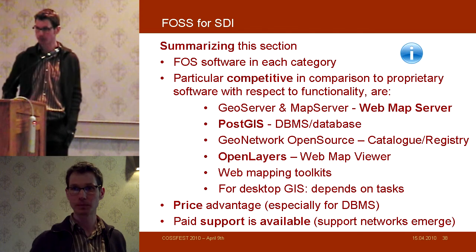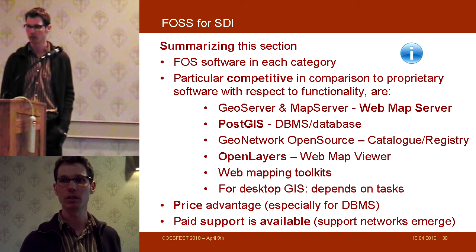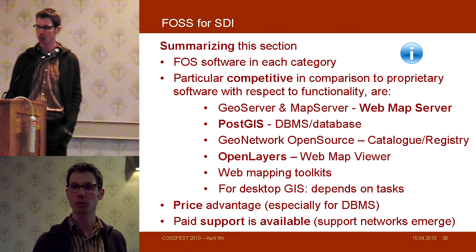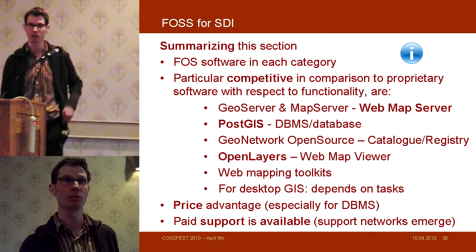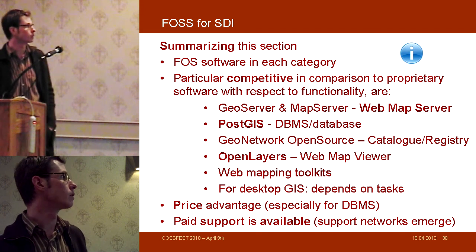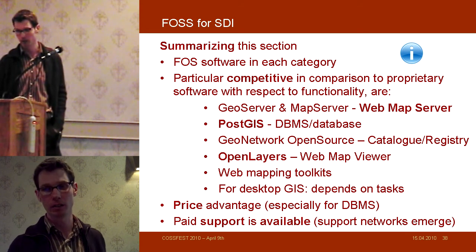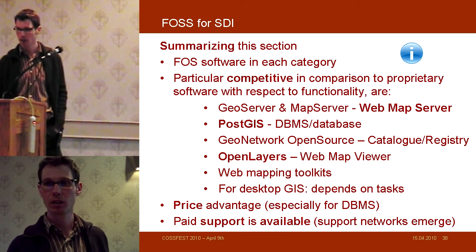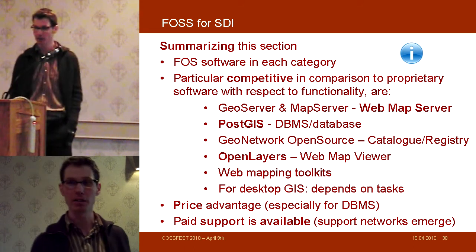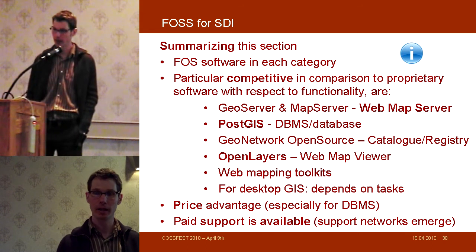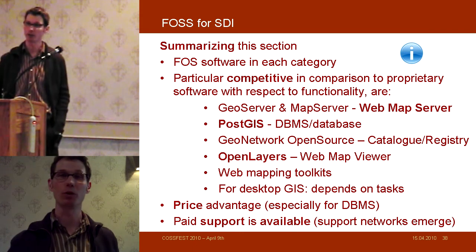Summarizing: we have free and open source software in each of the categories needed. Particularly competitive compared to proprietary software are GeoServer and MapServer, PostGIS as a database, GeoNetwork Open Source for catalog and registry, OpenLayers as a web map viewer, and basically all web mapping toolkits. For desktop GIS, it depends on the task. There is also a clear pricing advantage, especially for database management systems. Paid support is available, and even regional support networks are emerging.